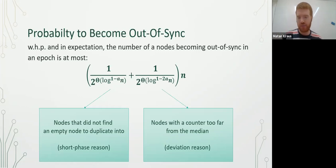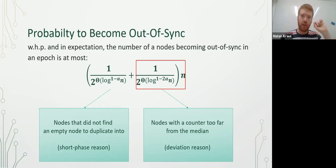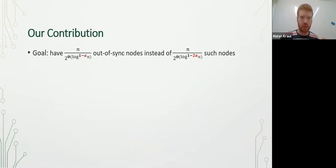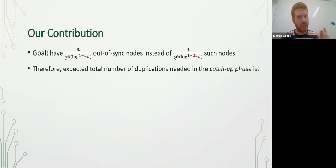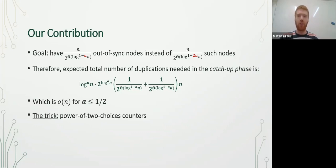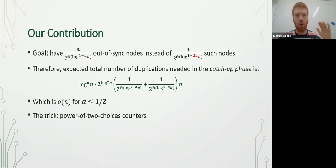The counter is too far away from the average, so the node cannot duplicate with all the other nodes. We want to reduce the probability of the deviation reason. We want to achieve n / 2^{Θ(log^{1-a} n)} out-of-sync nodes due to the deviation reason. If we do it, the expected number of duplications in the catch-up phase is an expression that is o(n) for a at most one-half, and therefore the number of interactions in the whole protocol will be O(n log^{3/2} n) interactions.